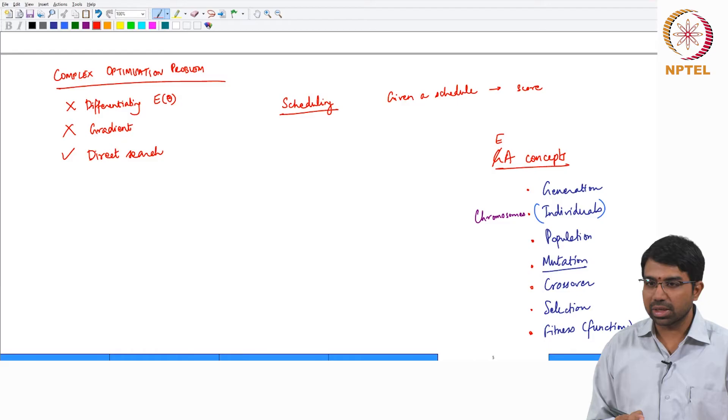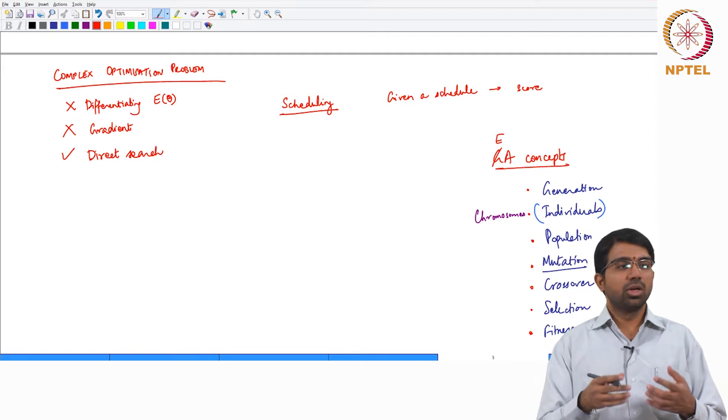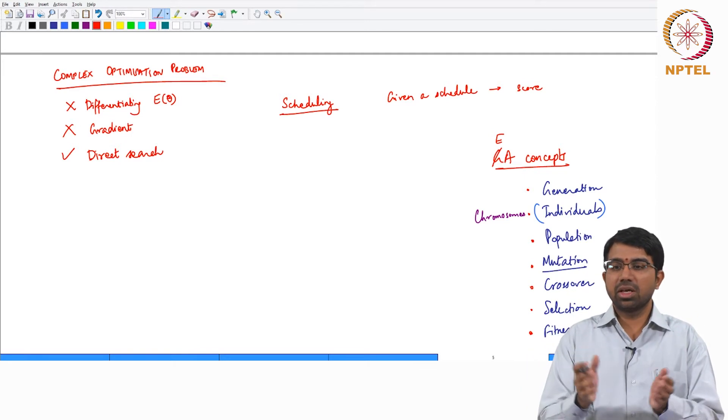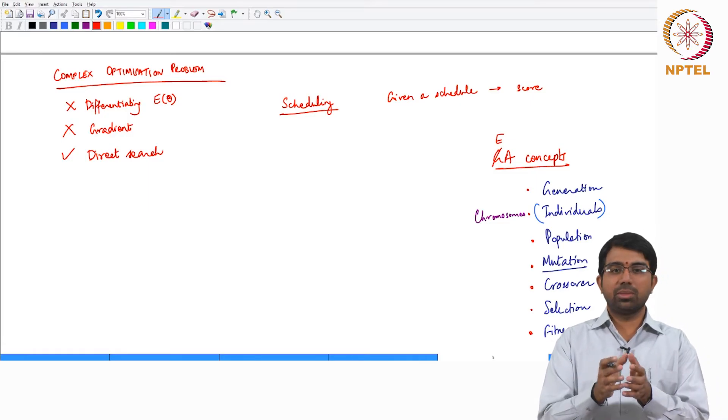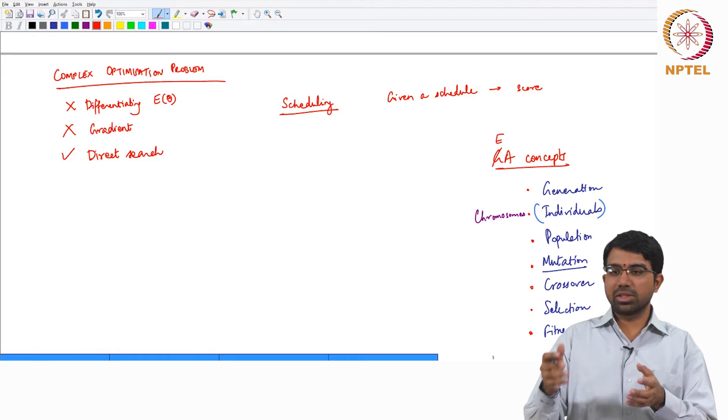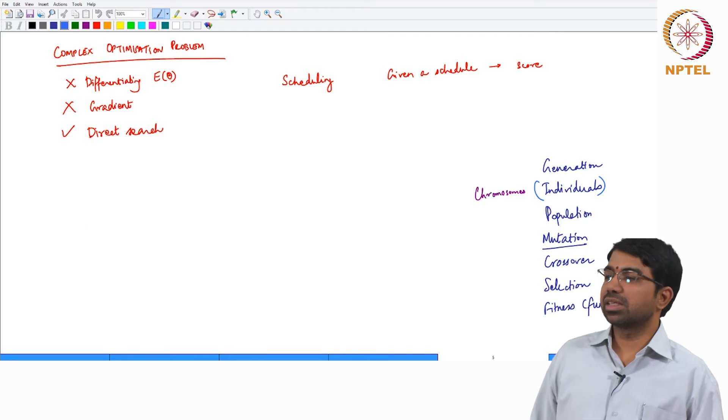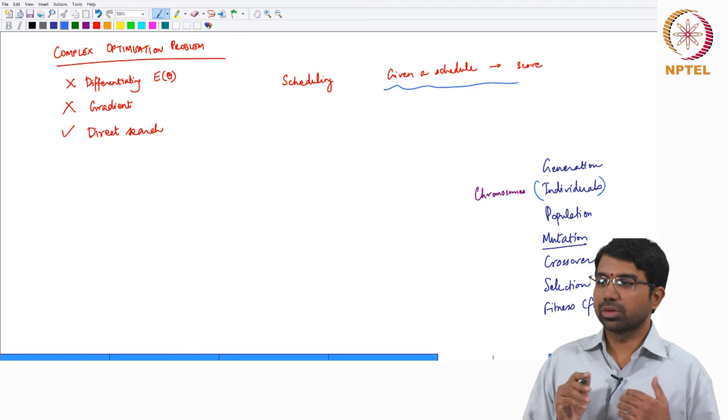So let us look at scheduling. Another example I usually give is how do you schedule the IPL. You may want to schedule the IPL in such a way that you do not have too many free matchless days for a particular team. You normally find in the IPL schedule that the same team might be playing on two consecutive days, but then they may not have a match for like four, five days. If you have a schedule, you can compute some sort of a score.